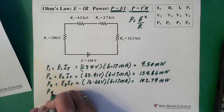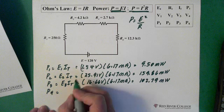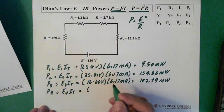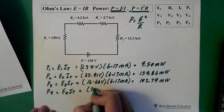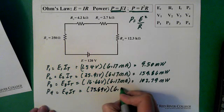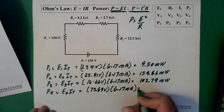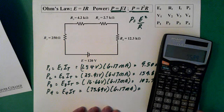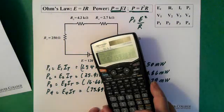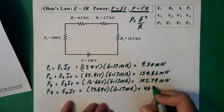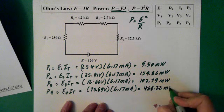And last one. Power across resistor 4. E4 times I total. What's that voltage? 75.89 volts, times our current. This is obviously going to be a larger one. 75.89 times recall current equals 468.22. 468.22 milliwatts.